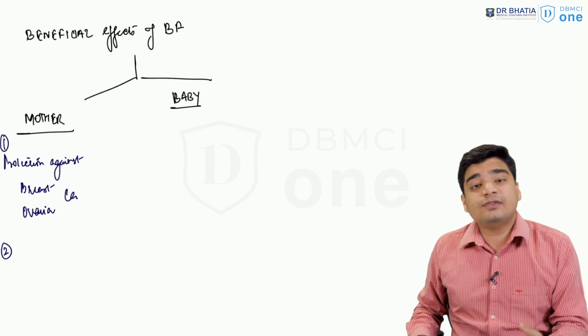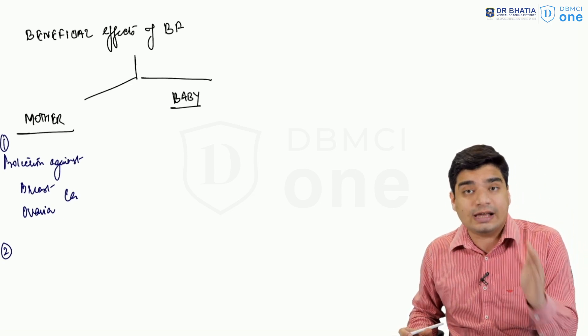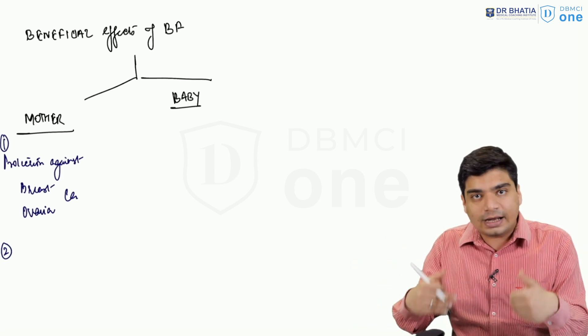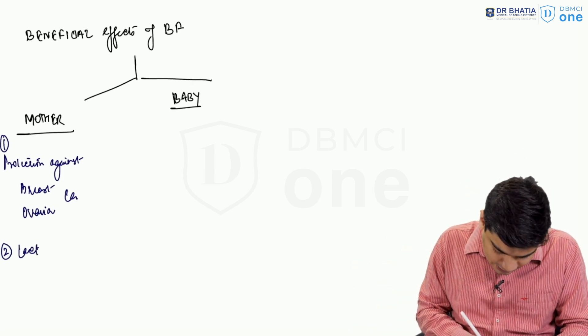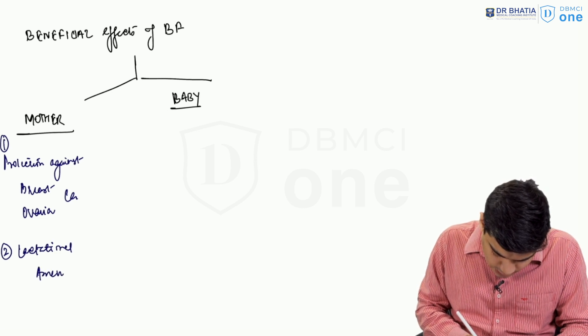The second thing that has been shown is that obviously if you keep on breastfeeding the child, the prolactin is going to result in lactational amenorrhea, spacing out between the two babies, again beneficial for the mother. So it results in lactational amenorrhea.